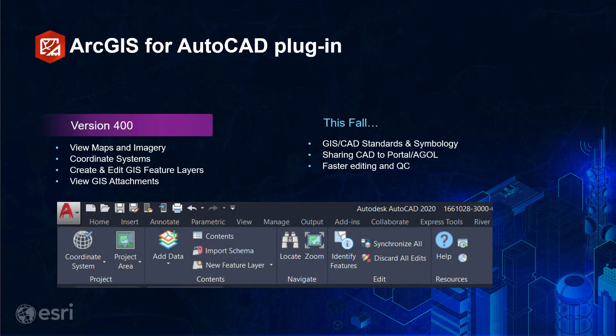ArcGIS for AutoCAD is an application from Esri that plugs into AutoCAD and Civil 3D. It was first introduced in 2007 and allows you to interact with and edit ArcGIS web layers using standard AutoCAD. It even allows you to create and share ArcGIS data within a standard DWG file. The newest release includes a tighter integration with ArcGIS Online and Enterprise Portal and allows you to search for content in your organization or the greater web community.